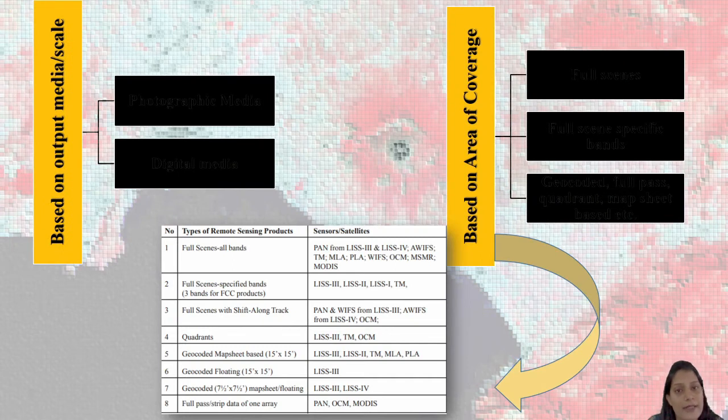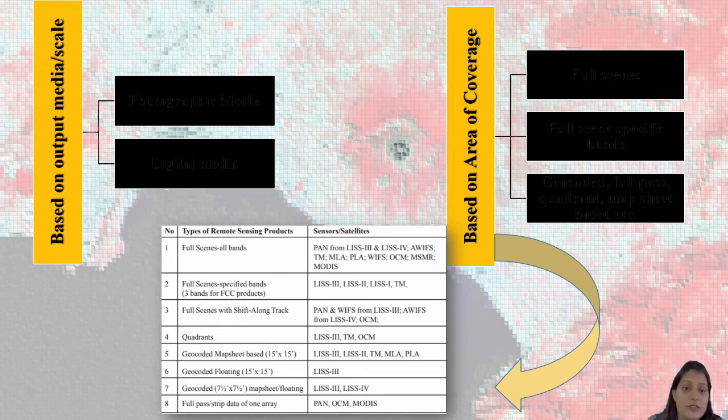Derived products are where specific characteristics are extracted. For example, I would like temperature information, information related to urban areas, or information related to vegetation. That is known as derived product. Based on output, data is available in photographic media and digital form: CD, DVD, pen drive, email, or Google Doc. Based on area of coverage, you can order full scene, half scene, specific bands for vegetation, water, or urban bodies. Full pass or map sheet.